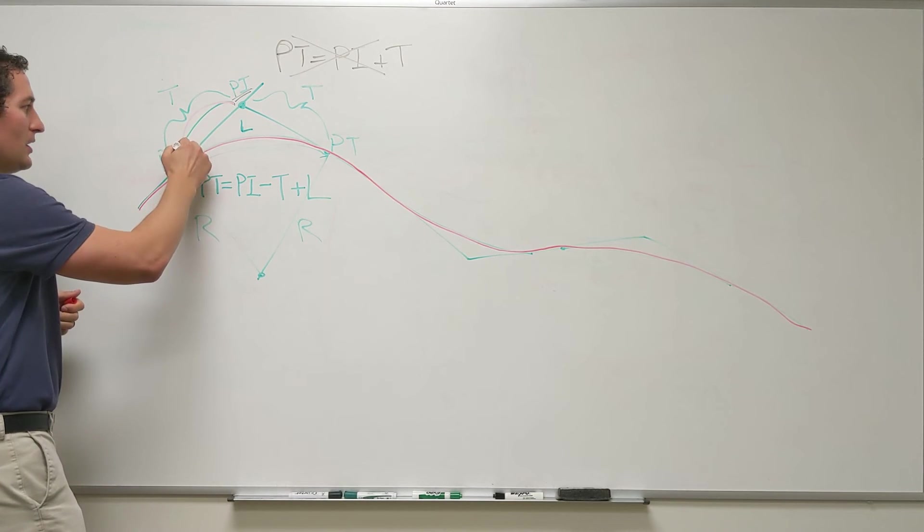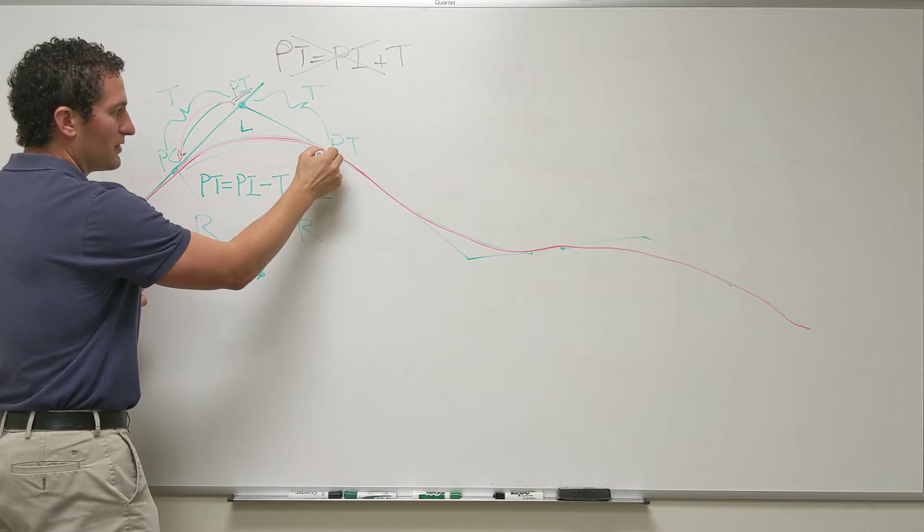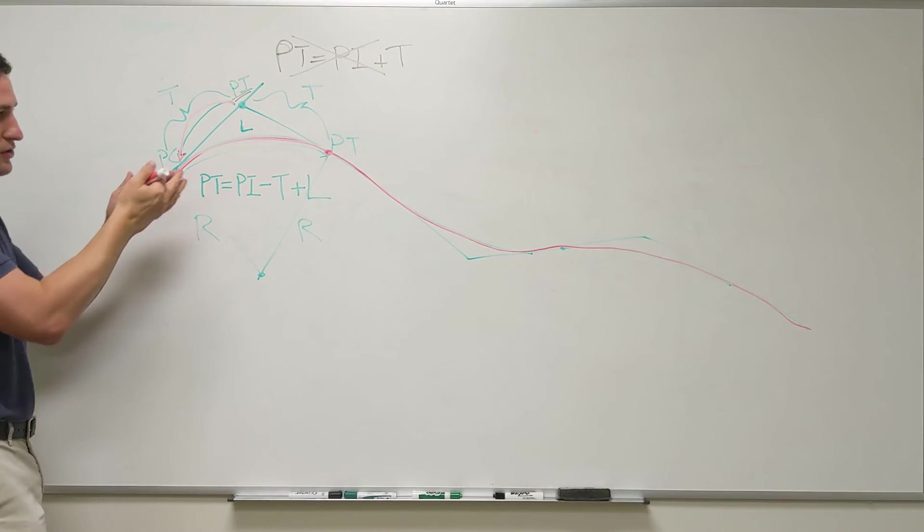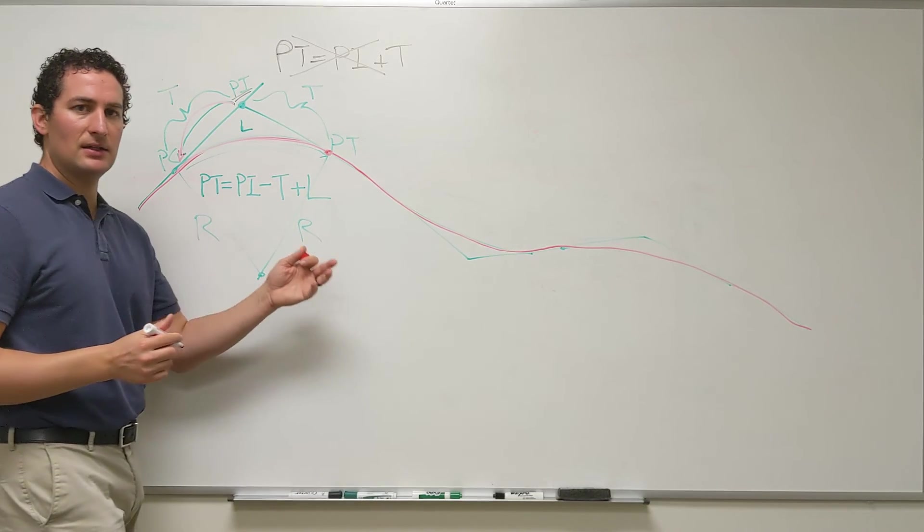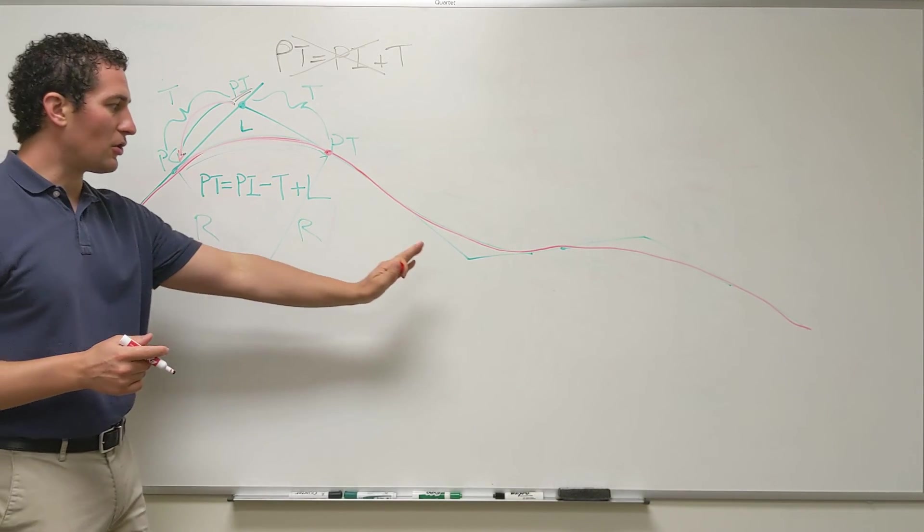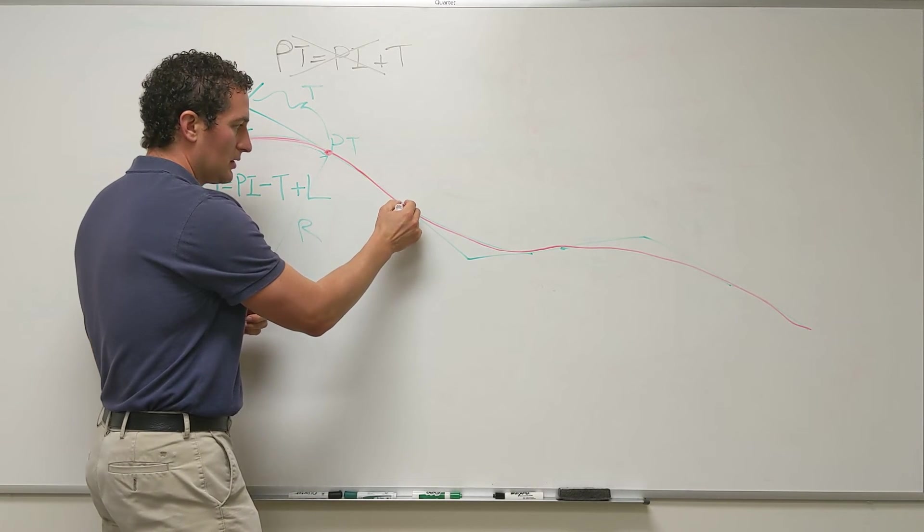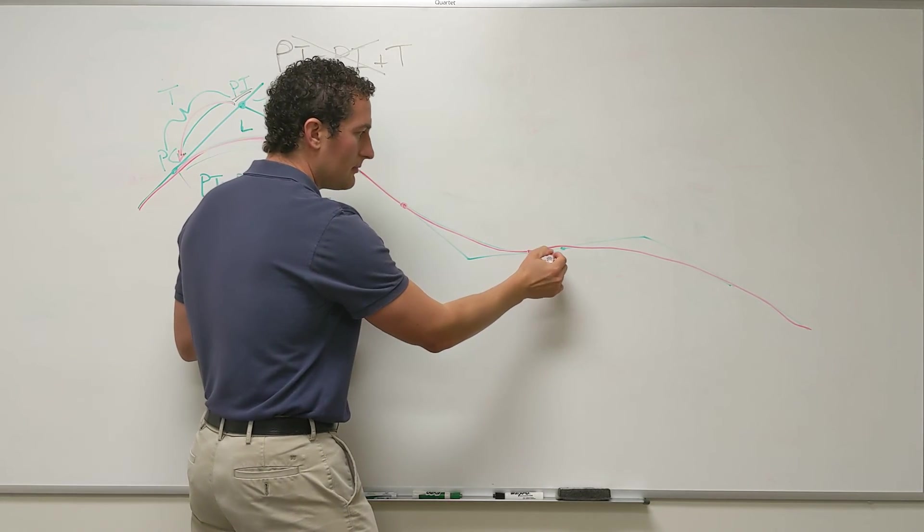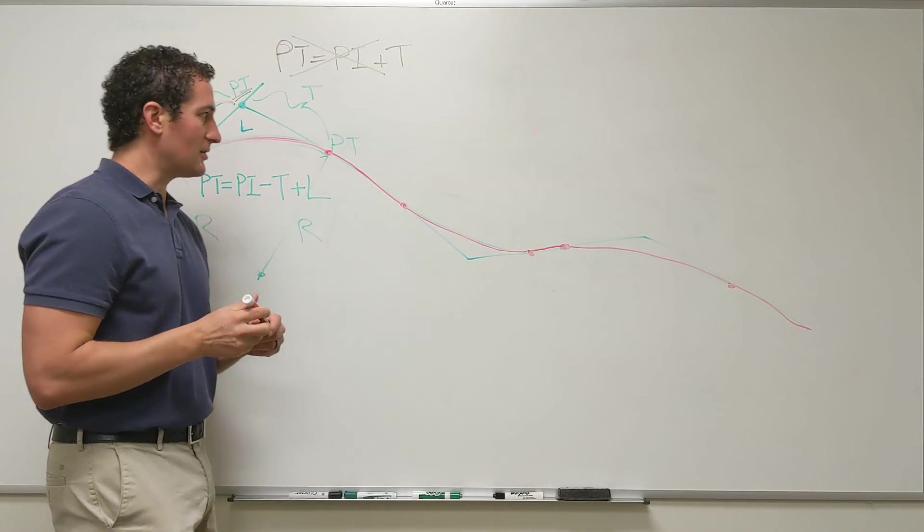So that's why we're going to start with the PI. We're going to go back to that PC and then along the length of curve to find the station of the PT. And we're going to do that continuously. As we move along, if we're given various PI stations, we're going to need to start there and then return back to our center line and move along that center line for the stationing for our whole roadway system.